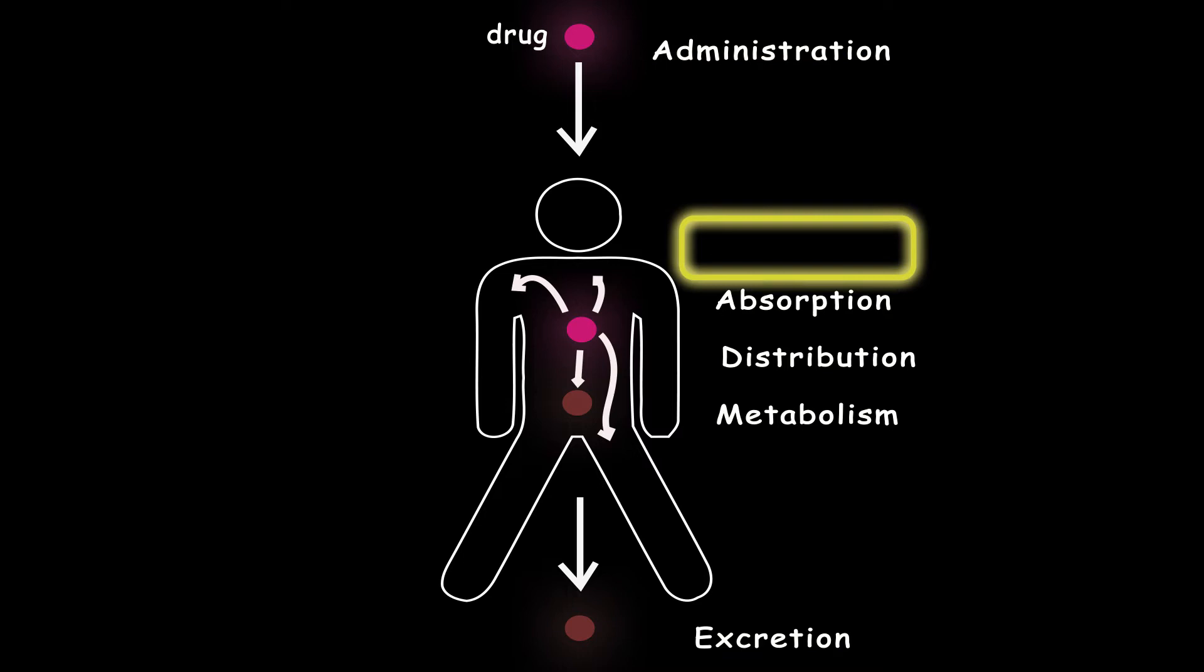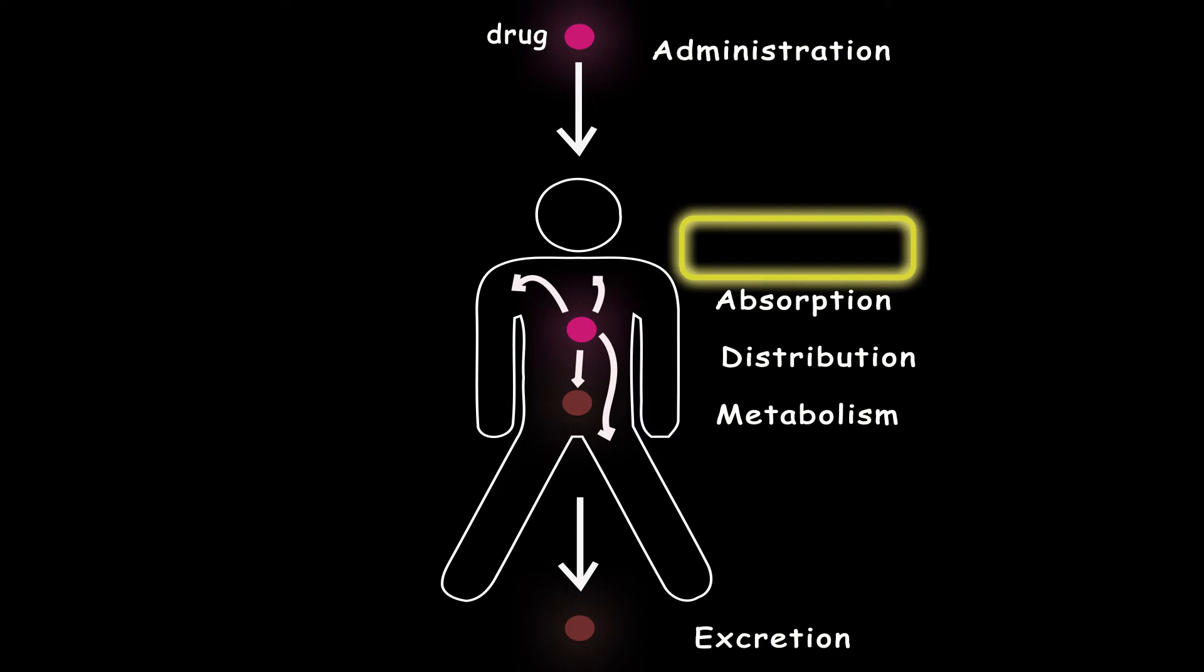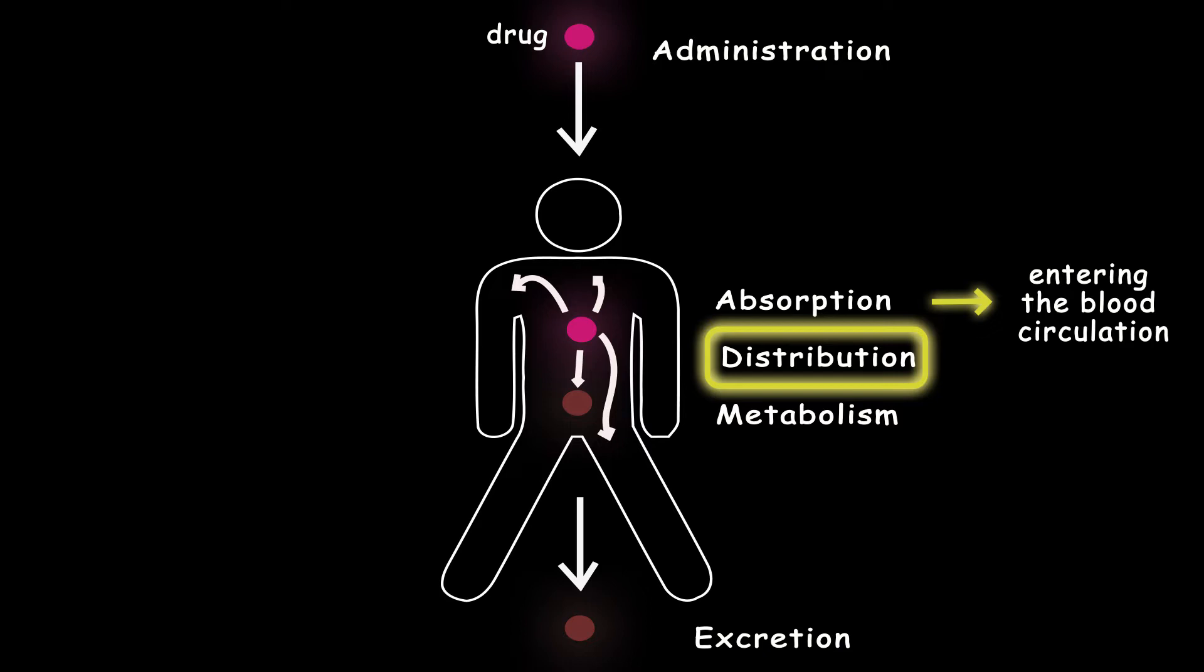First you need to know that we have different routes of administration, which means there are different ways for the drug to enter your body and get into your bloodstream. So the circulatory system would help the drugs distribute in your body until they reach their target.